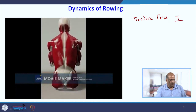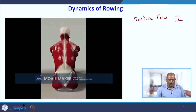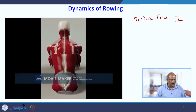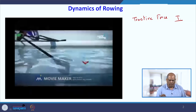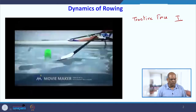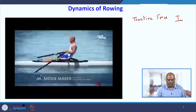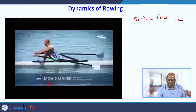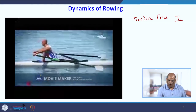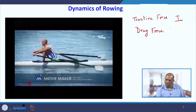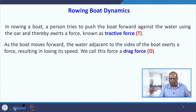Let us denote it by T. And as the boat moves forward, you will see that the water adjacent to the sides of the boat exerts a force, resulting in the boat losing its speed. So basically it will be in the opposite direction, and we call that force the drag force. Let us denote it with D. While forming the equation of motion, we have to take care of what is the tractive force and what is the drag force.